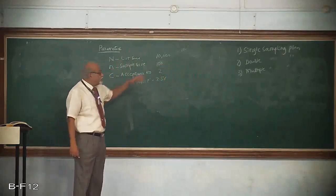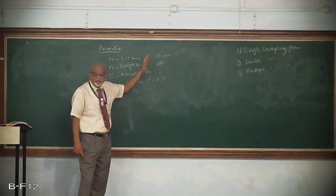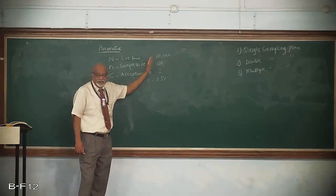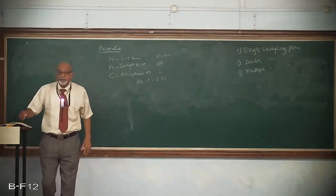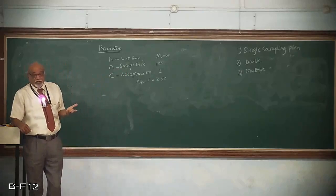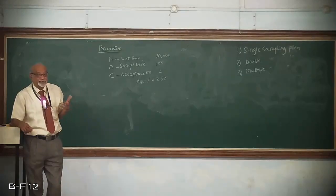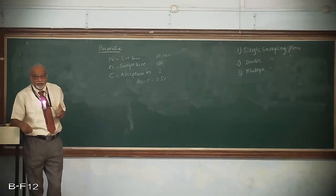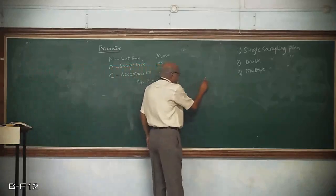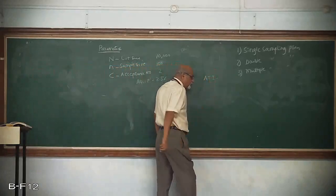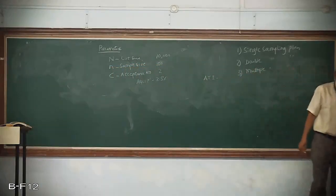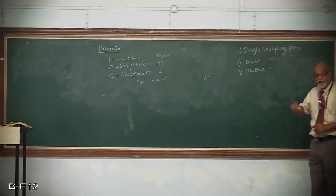Under these circumstances, how many lots will be accepted if the lot is really good — if it contains zero defectives? The producer will say it is 0% defective. Then the probability of acceptance is going to be 100%. If the probability of acceptance is 100%, on an average, how many pieces will have been inspected per lot? That is called ATI — Average Total Inspection. This is one of the measures of performance to determine which type of sampling plan we should use.